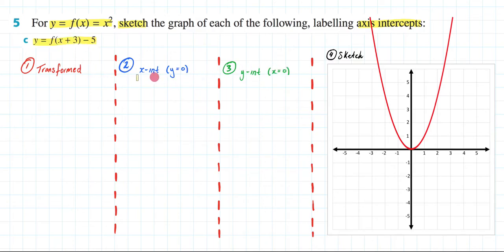So I've broken this down into a few steps. We will first find our newly transformed rule, we'll then find the x intercept, then the y intercept, and then the last thing that we will do is give it a sketch. And as you can see I've already sketched y equals x squared because that is what they have originally given us.